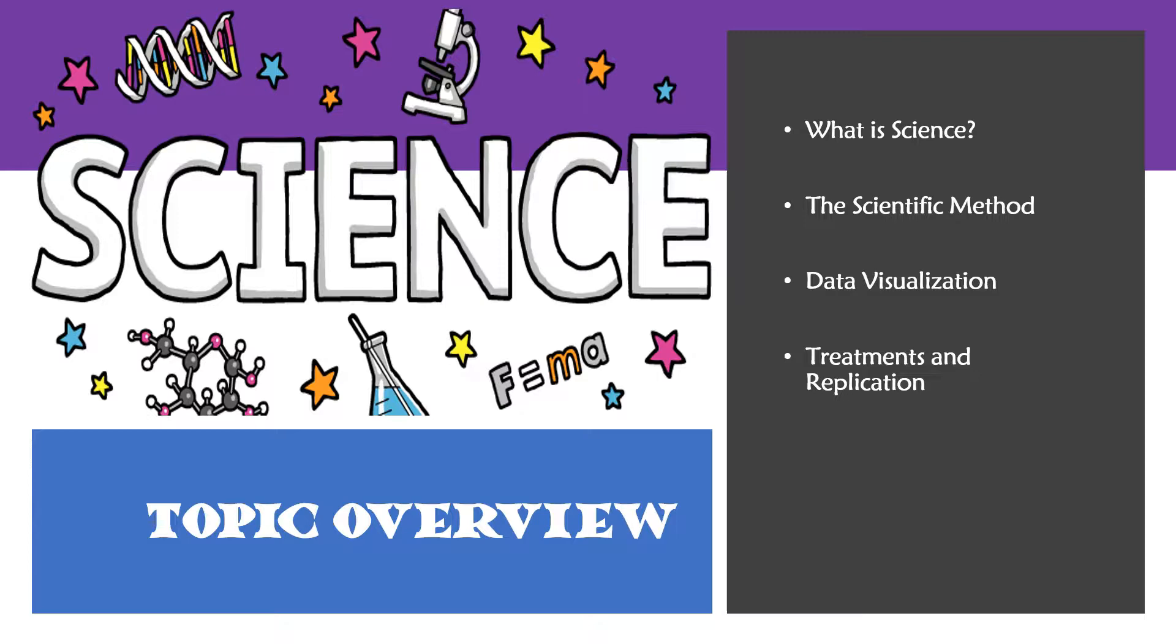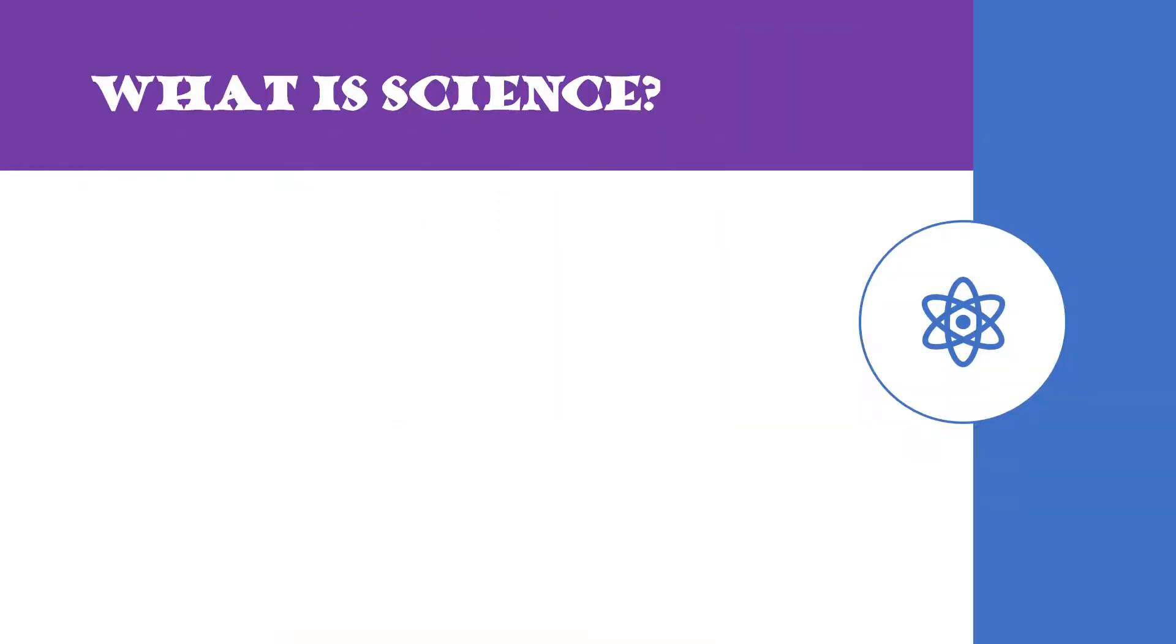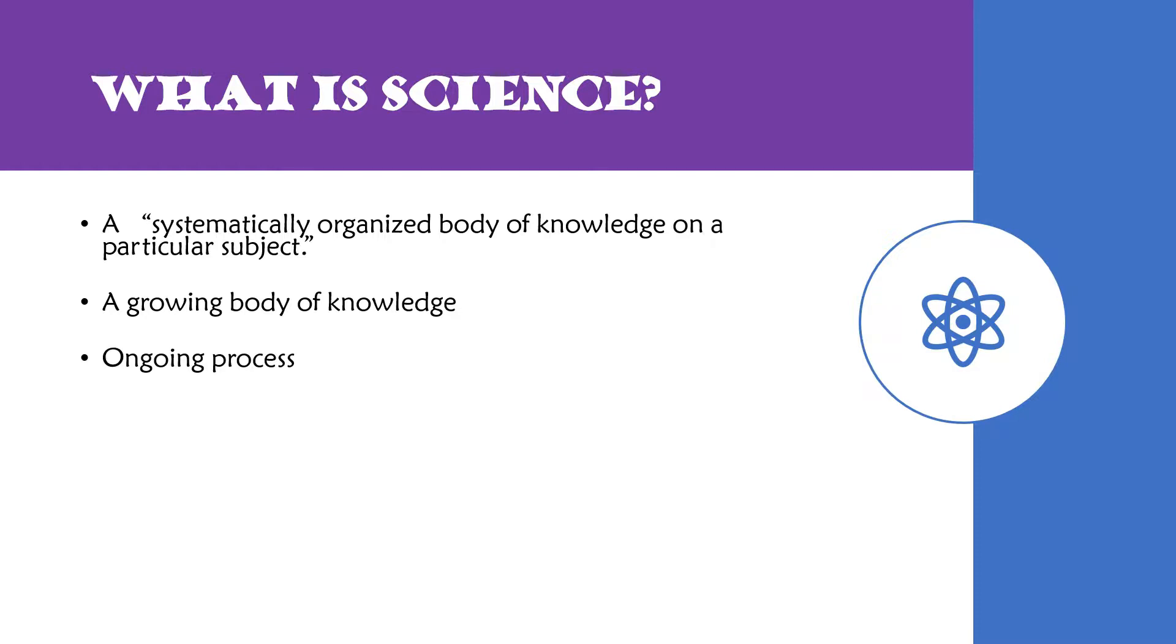So what is science? Well, the dictionary defines science as a systematically organized body of knowledge on a particular subject. It is important to note that this body of knowledge is continually growing with the addition of new research. And what is truly amazing about science is it is a global human effort to understand how the natural world works. And how do we attempt to understand how the natural world works? The scientific method.